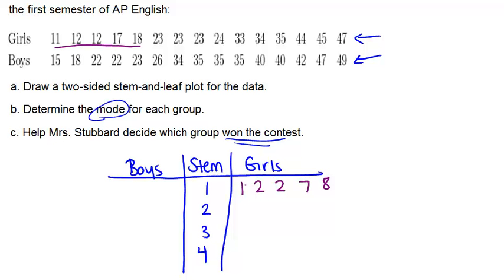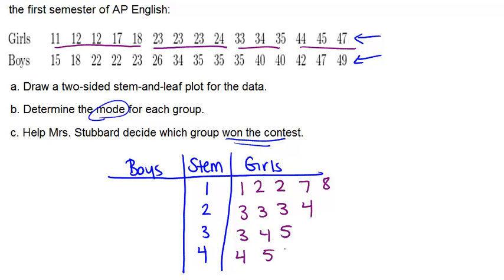In the 20s we had 23, 23, 23, and 24. In the 30s we had 33, 34, and 35. And in the 40s we had 44, 45, and 47. Remember that when making a stem and leaf plot, you should try to evenly space the numbers so they line up in consecutive rows, and make sure that numbers are in numerical order within each row.